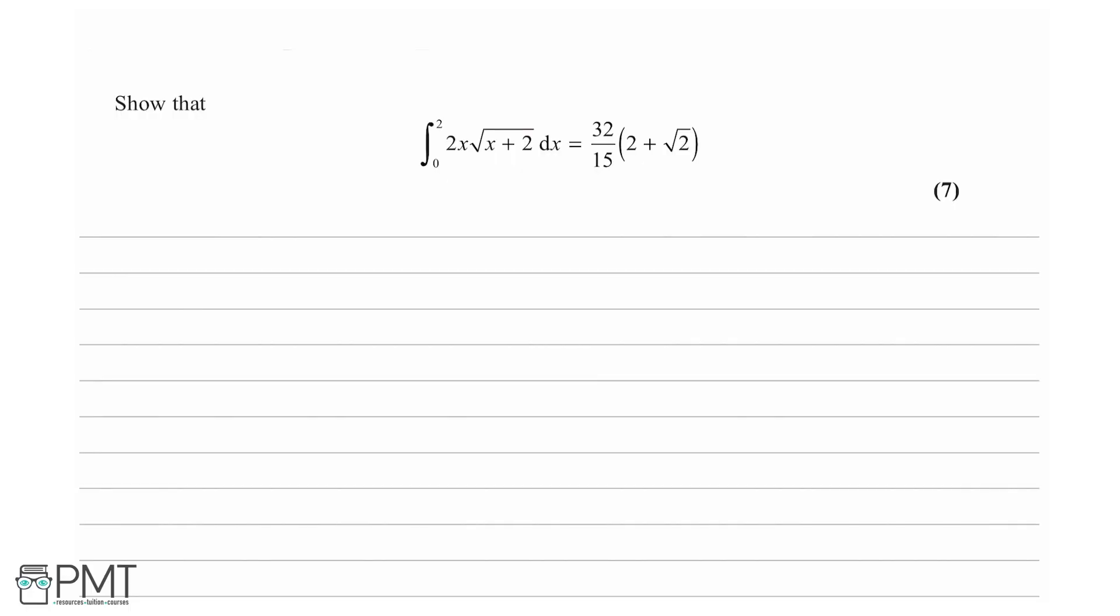We have been asked to show that the integral from 0 to 2 of 2x times the square root of x plus 2 with respect to x is 32 over 15 times (2 plus root 2) for 7 marks.